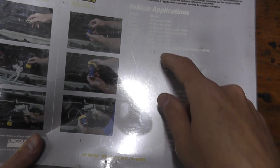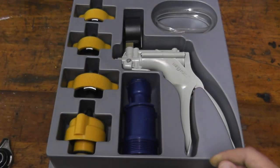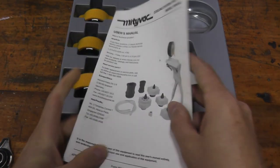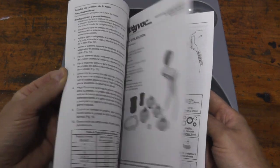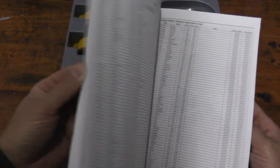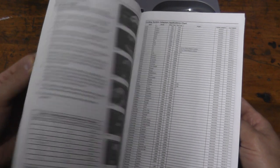On the back it tells you all of the makes and models that it does work with and it does include an instruction manual and in the back I'll quickly show you as you can see all the makes and models and so on.